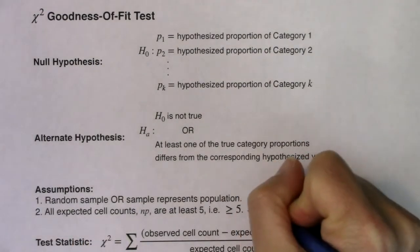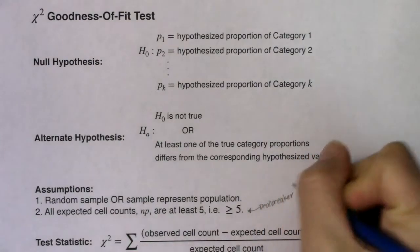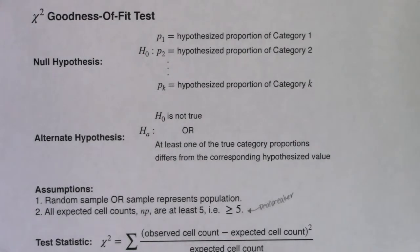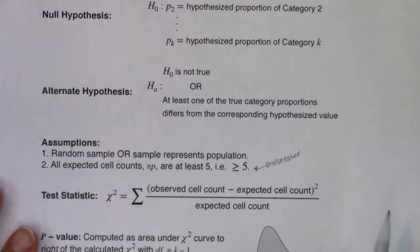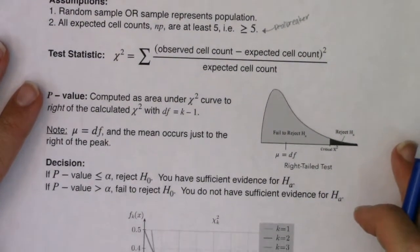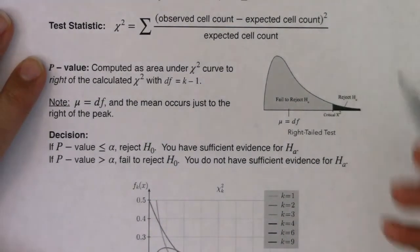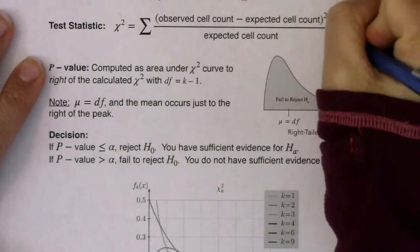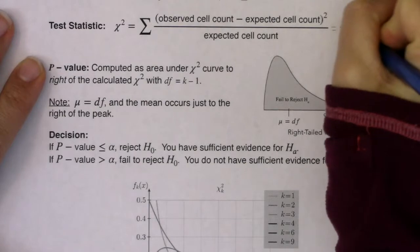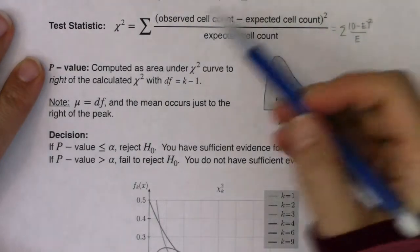If this assumption isn't met, we stop the problem, because we can't get on the chi-squared distribution and can't use chi-squared CDF. Our test statistic is observed minus expected, squared, over expected. You'll frequently see me write the sum of (O minus E) squared over E, using the abbreviations O and E for observed and expected.